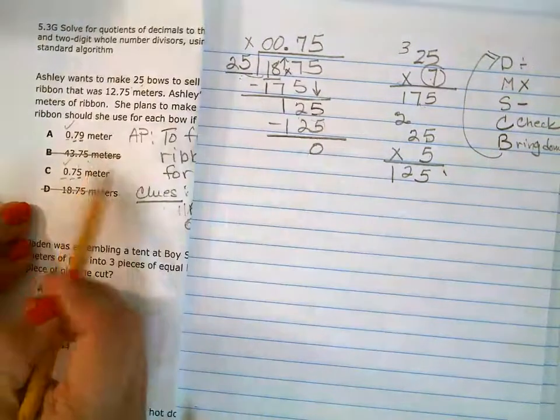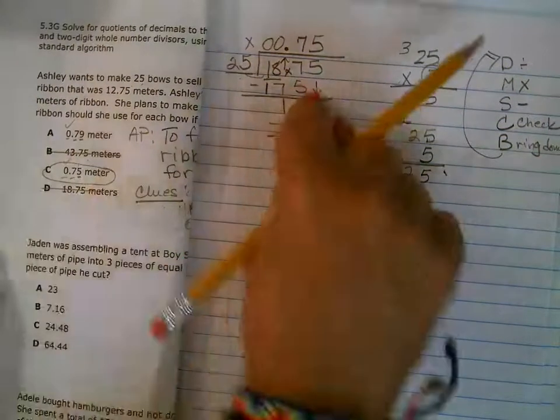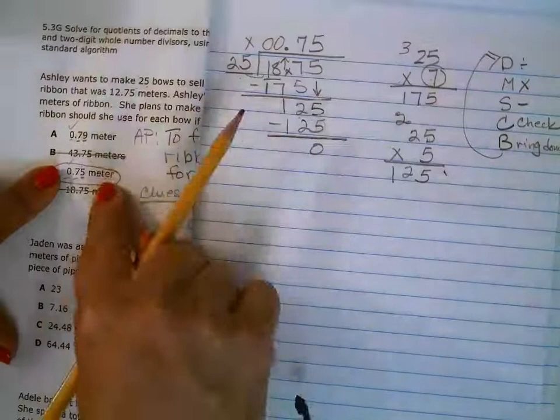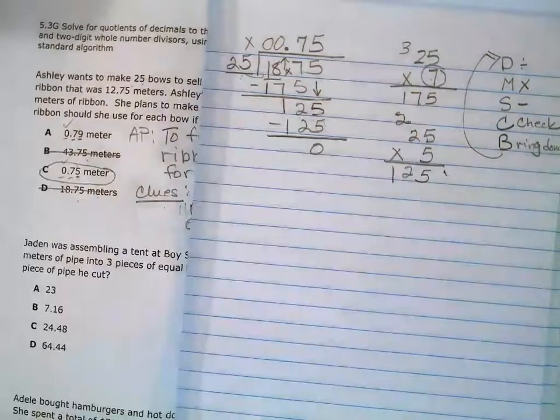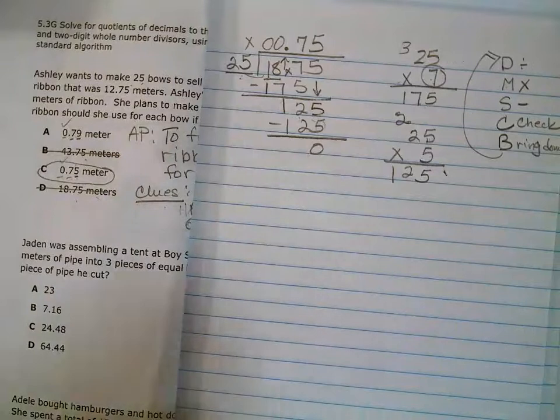So the correct answer is 75 hundredths meters per bow. So do you see how I use this in my answer choices and it made it so much easier? Alright. We're going to keep practicing on that one. Alright. We'll see you on the next one. Bye.